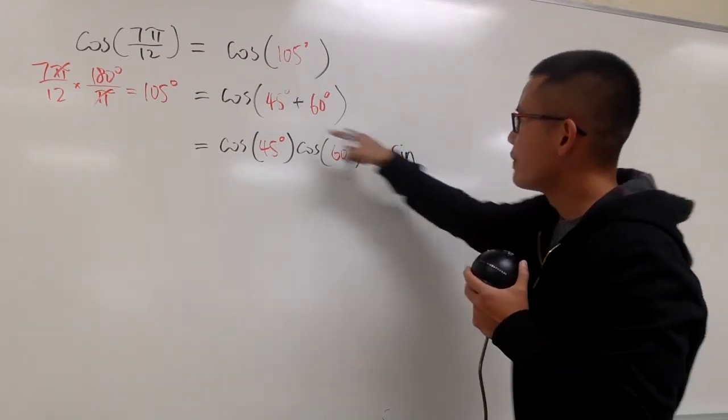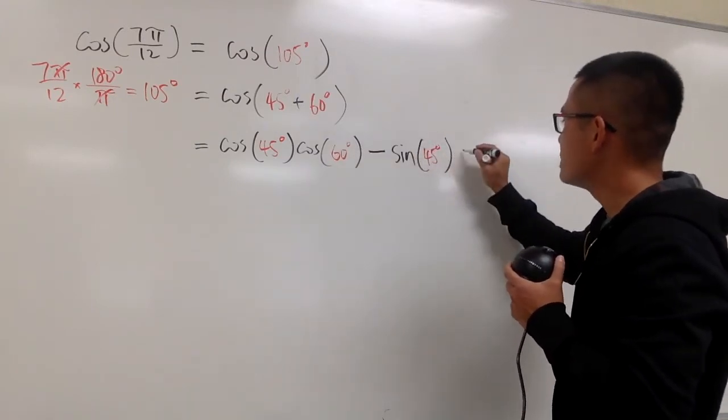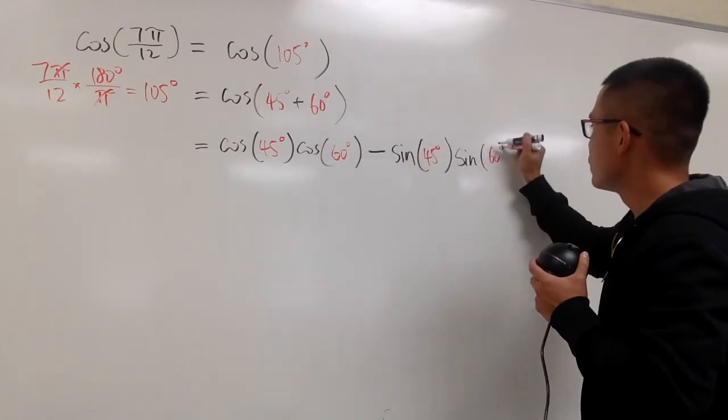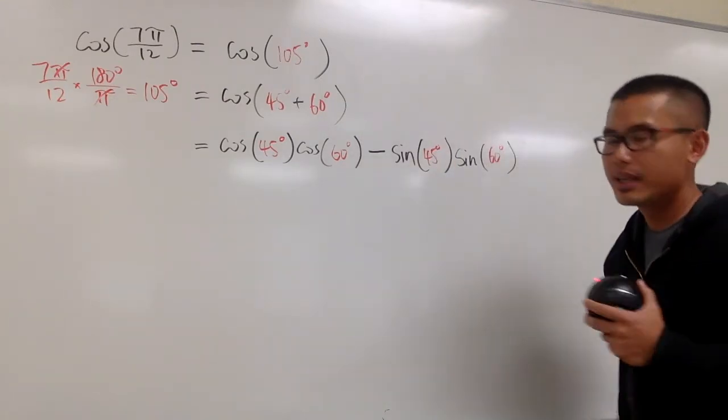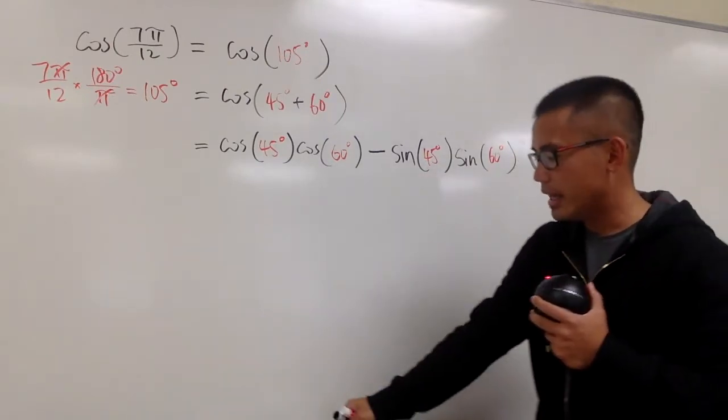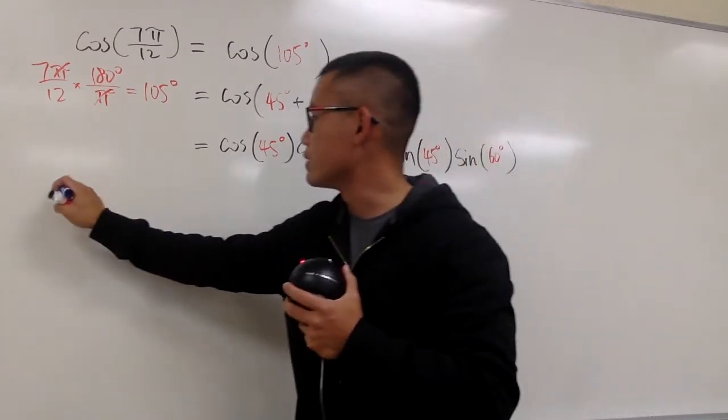Minus sine of the first, which is the 45 degrees, times sine of the second, which is the 60 degrees right here. And now, we just have to figure them out individually, right? And of course, we have to utilize the special triangle. Let me just draw this for you guys real quick.